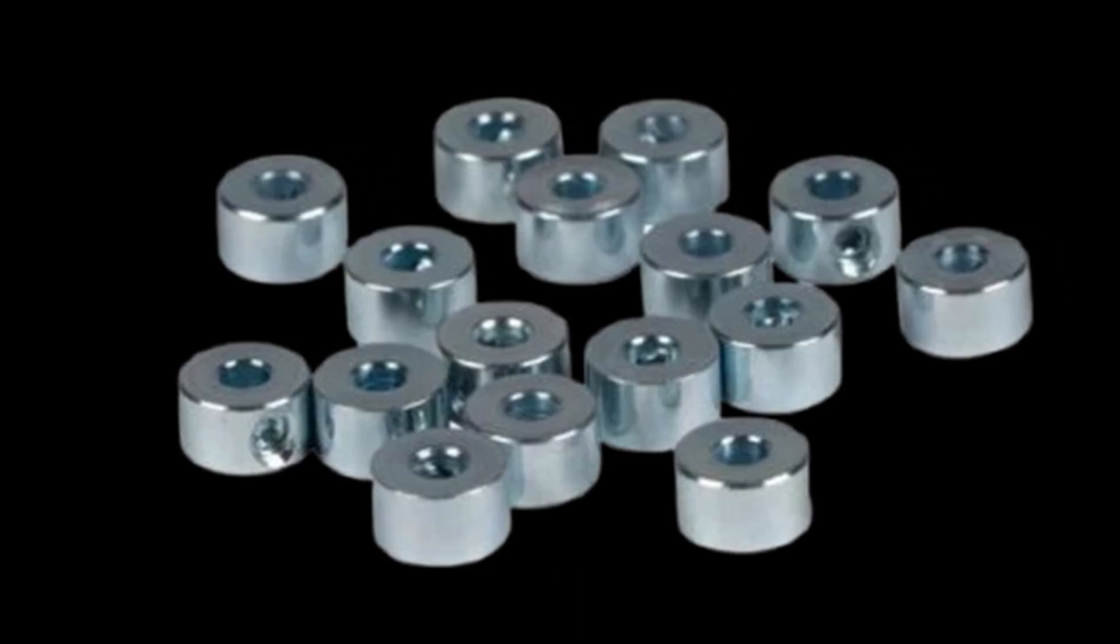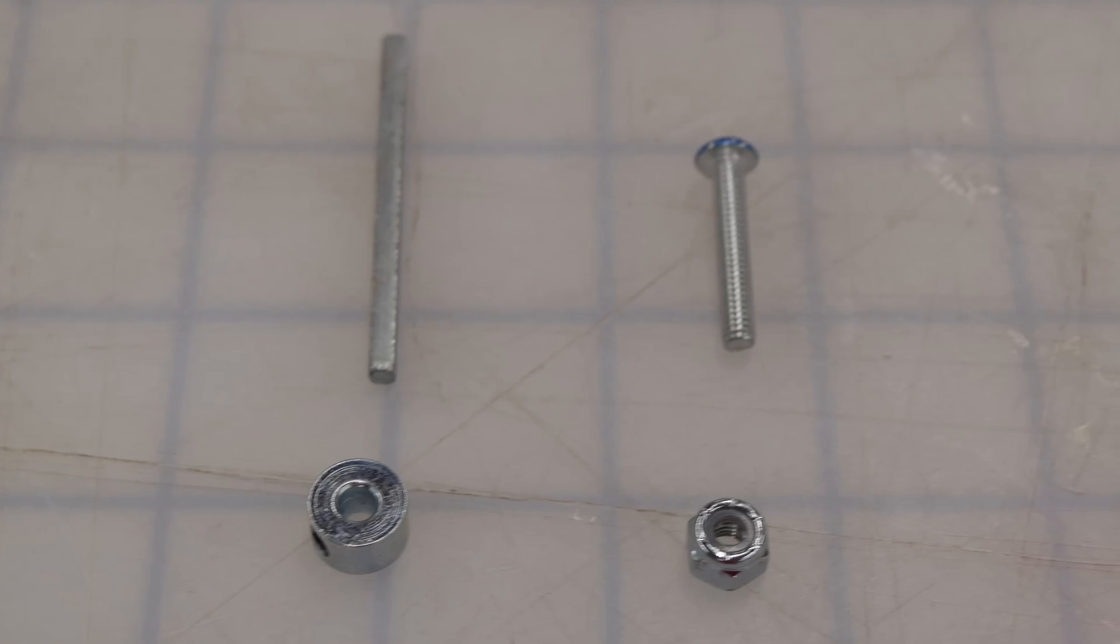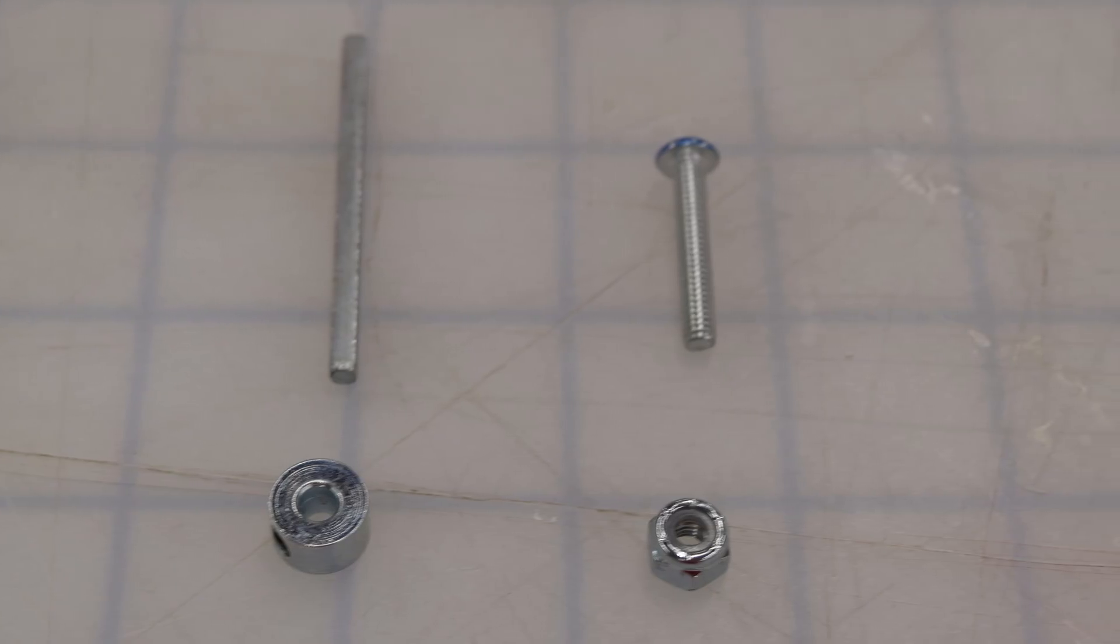The most important thing with axles is to use axle collars. Axle collars are like locking nuts for axles. They stop your wheels and gears from wiggling around and falling off. You should be using them all the time when building with axles.